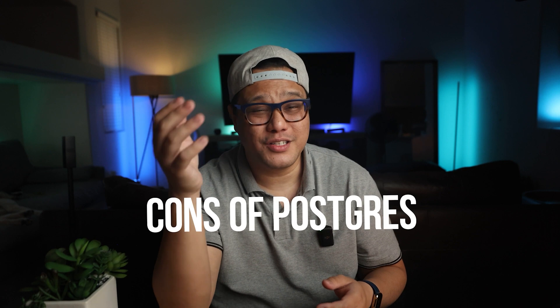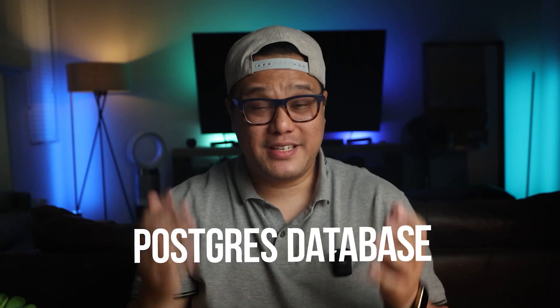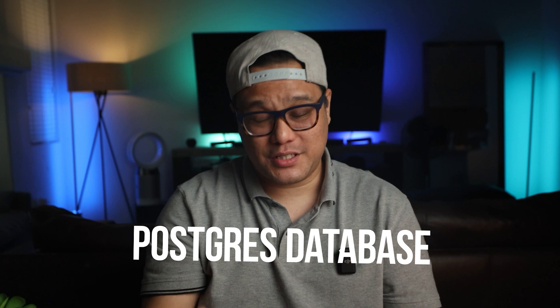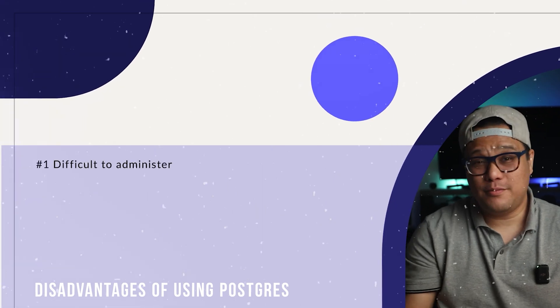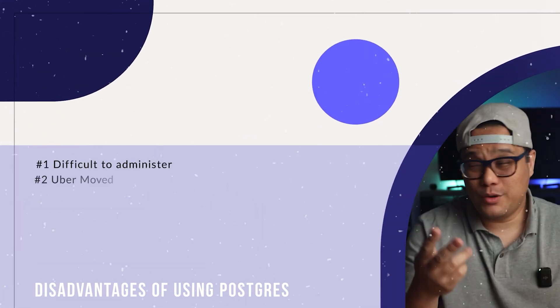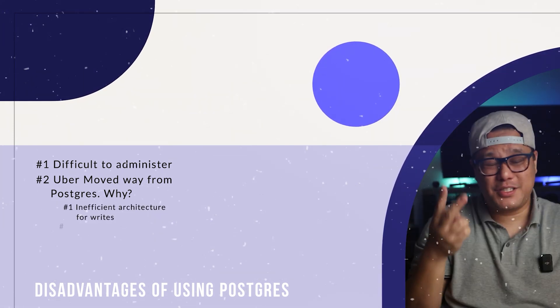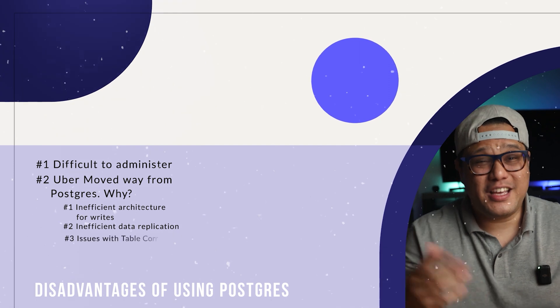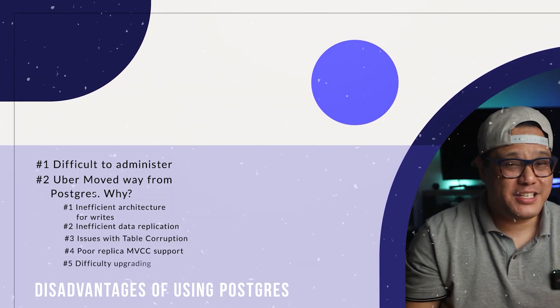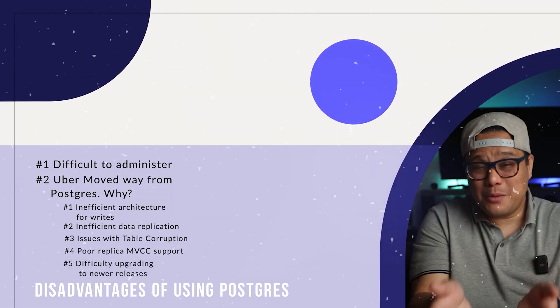Now, what are the cons of using Postgres? The Postgres database is well suited for vertical scaling, but when it comes to horizontal scalability, things aren't quite as simple. For example, it can be difficult to administer. Uber itself moved away from Postgres, citing inefficiency in its architecture for writes. Other cons include inefficient data replication, issues with table corruption, poor replication, MVCC support challenges, and difficult upgrading to new releases. There are many cons and many pros, so it's up to you to determine if Postgres is right for you.